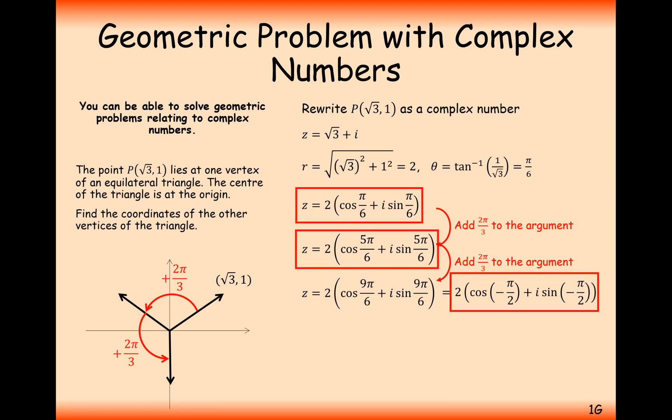So these are our three roots then. What we'll now need to do is expand the modulus argument form to get the Cartesian form of the complex numbers, and then just rewrite the Cartesian form of the complex numbers as coordinates. So √3 + i, -√3 + i, and -2i. So there we have it, that's the answer to this question.